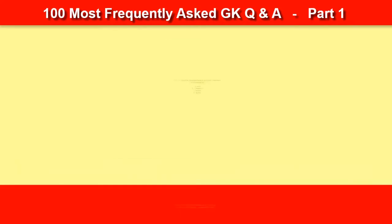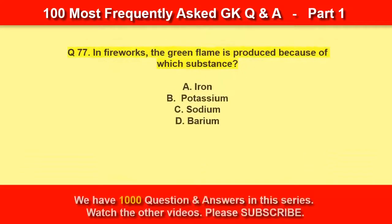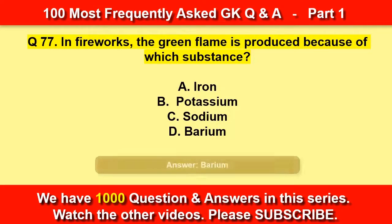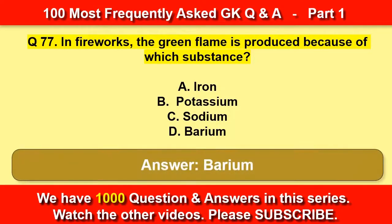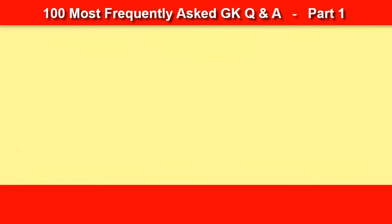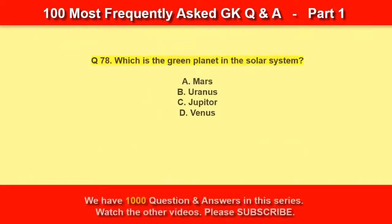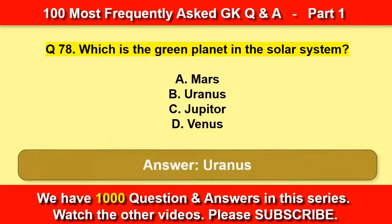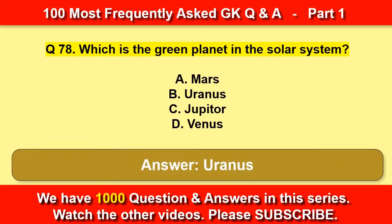In fireworks, the green flame is produced because of which substance? Barium. Which is the green planet in the solar system? Uranus.